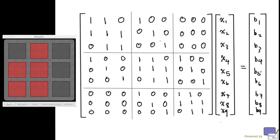We're trying to solve this system where the right-hand side b-values correspond to the configuration of lights. In this case, squares 2, 4, 5, 7, and 8 have their lights on, so b2, b4, b5, b7, b8 will have value 1, and the rest will be 0. We're going to solve this using row reduction for the general values b1 up to b9, which means at the end we will have solved the 3×3 version of Lights Out for all possible configurations.